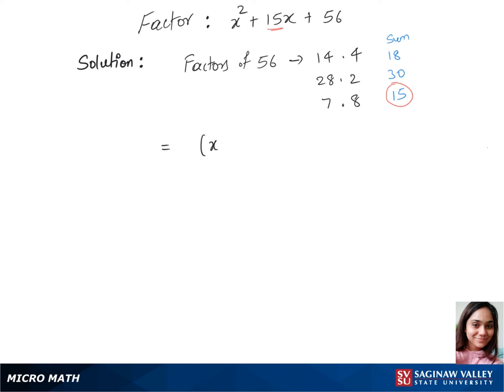So we'll plug in 7 and 8 into our expression. That gives us x plus 7 times x plus 8. This is our final answer and those are the factors.